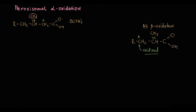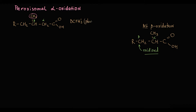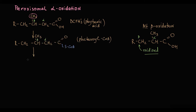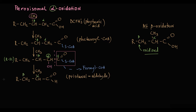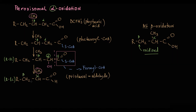Peroxisomes make the beta-carbon free by converting it to the alpha-carbon. Phytanic acid is first converted into phytanoyl-CoA, and then peroxisomes oxidize the alpha-carbon, making a hydroxy group at the alpha position — that is why this process is called alpha-oxidation. Immediately after oxidation, formyl-CoA is cleaved, making the structure one carbon shorter, with formation of pristanol, which is an aldehyde. As a result, the methyl group is now at the alpha-carbon position and the beta-carbon position is free.